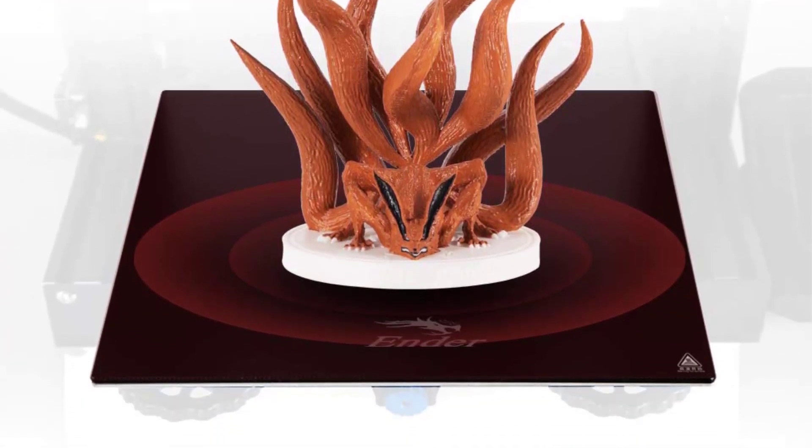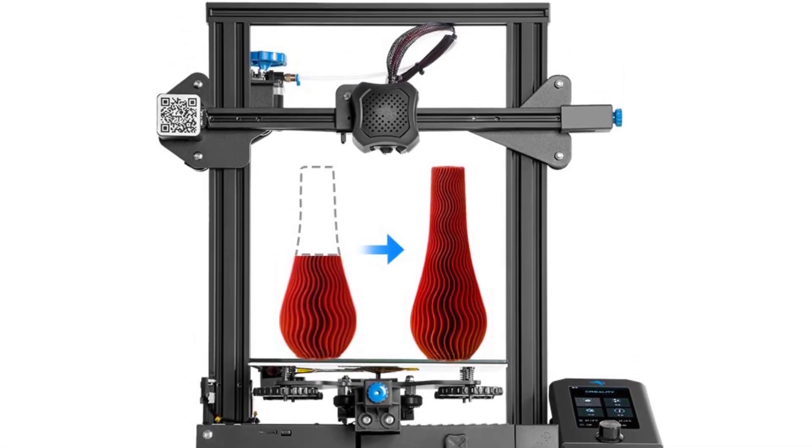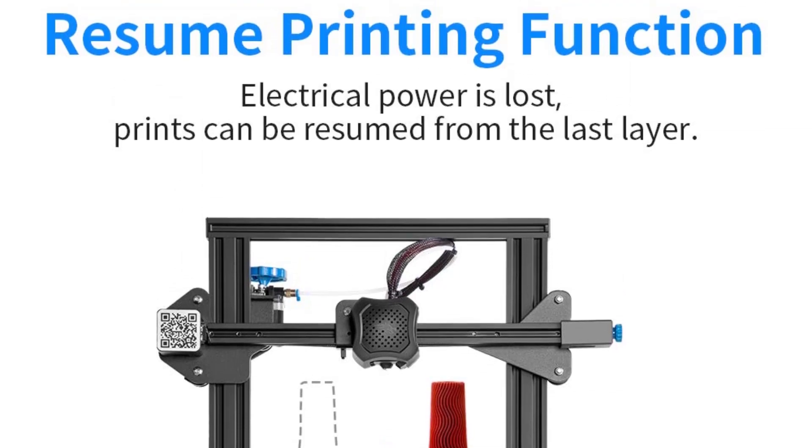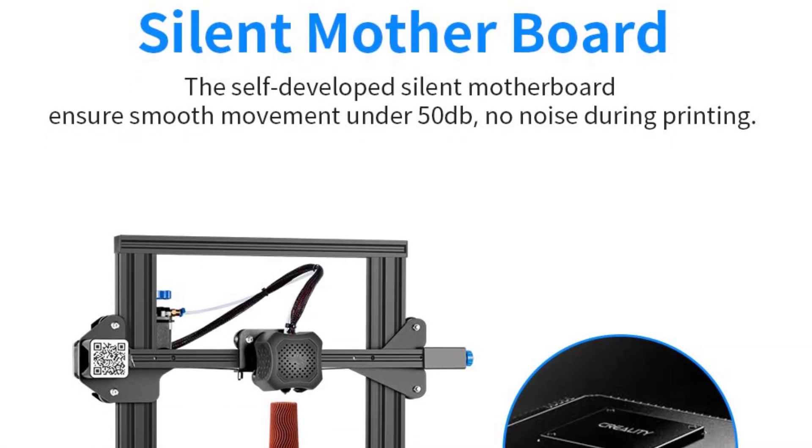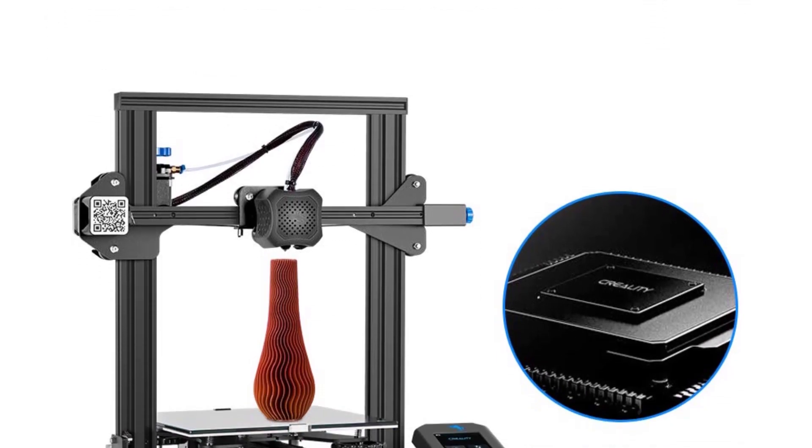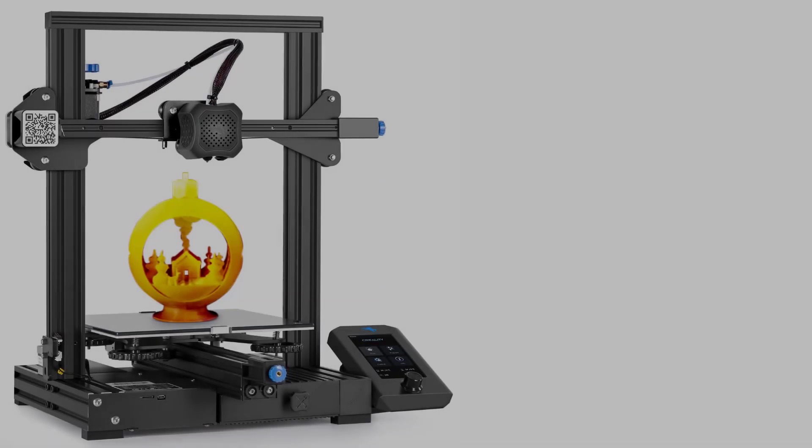Still, this isn't a deal-breaker given the Ender 3v2's entry-level price point, and it's easy to avoid problems if you take a couple of extra minutes to inspect the printer before making a print. We consider this printer's resume function to be its best feature because it gives you some flexibility if something happens in the middle of your print.